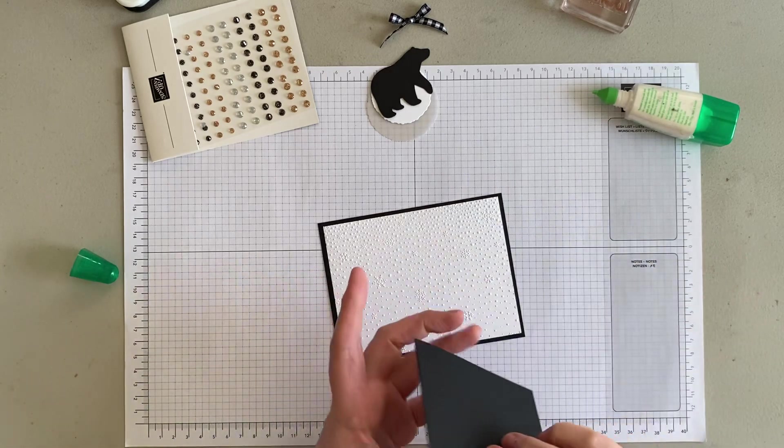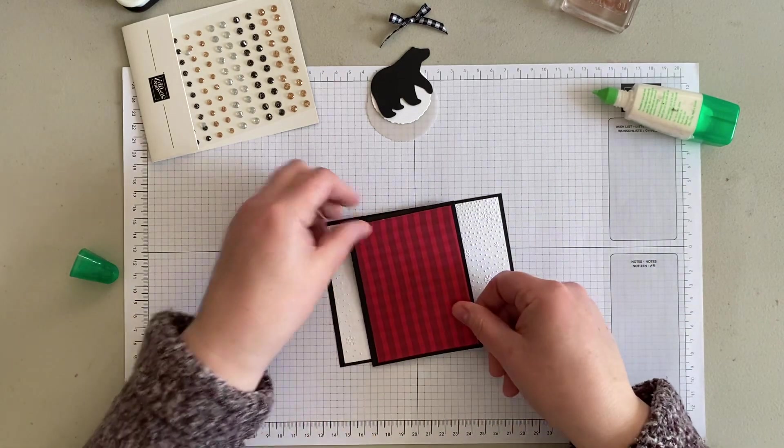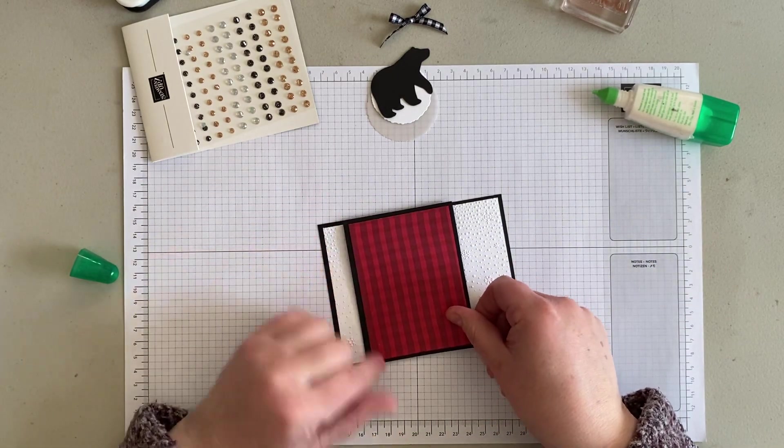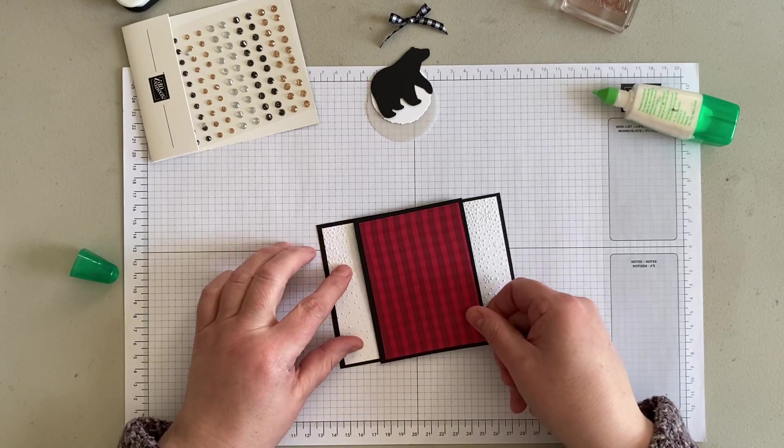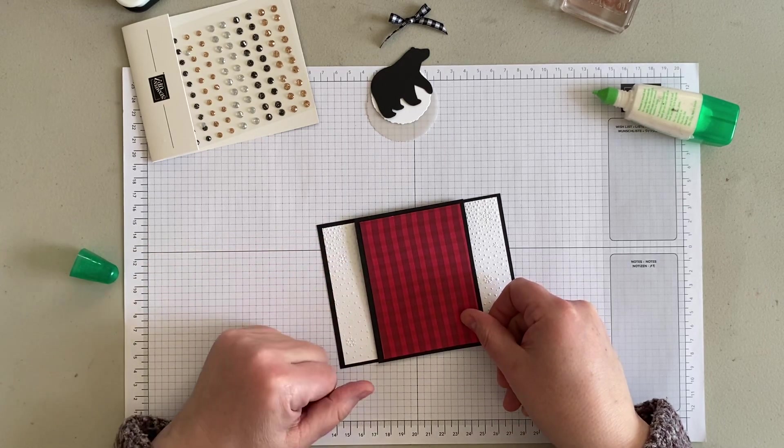Okay, so now all we're going to do is add some adhesive to the back and put that onto the card front. Now you could put it over to one side or you could center it. How you do that is totally up to you.